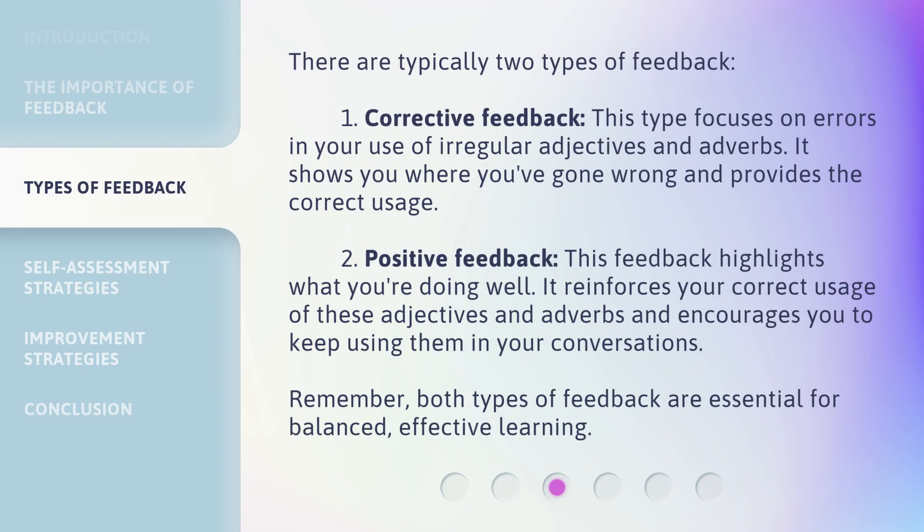There are typically two types of feedback. First, Corrective Feedback: this type focuses on errors in your use of irregular adjectives and adverbs. It shows you where you've gone wrong and provides the correct usage. Second, Positive Feedback: this highlights what you're doing well, reinforces your correct usage, and encourages you to keep using them in your conversations. Remember, both types of feedback are essential for balanced, effective learning.